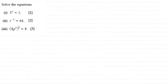Hi there. Now for this question we're asked to solve the equations. For part 1, 3 to the power n equals 1 for one mark. Part 2, t to the power minus 3 equals 64 for two marks. And finally in part 3, 8p to the power 6 all to the power one third equals 8 for three marks.